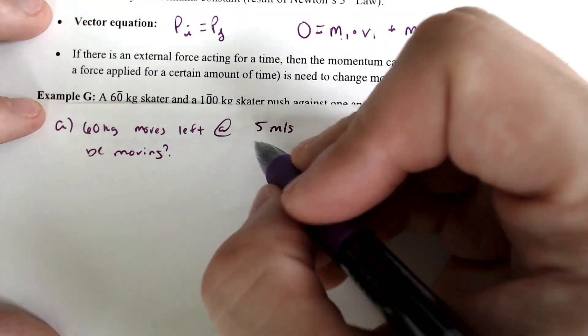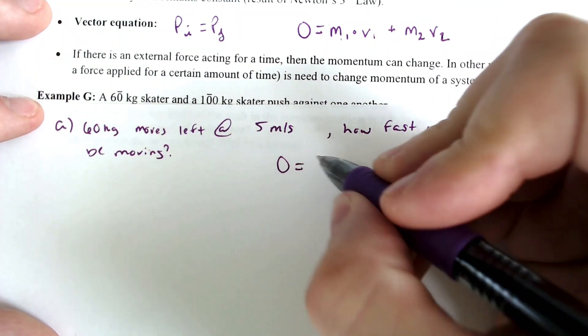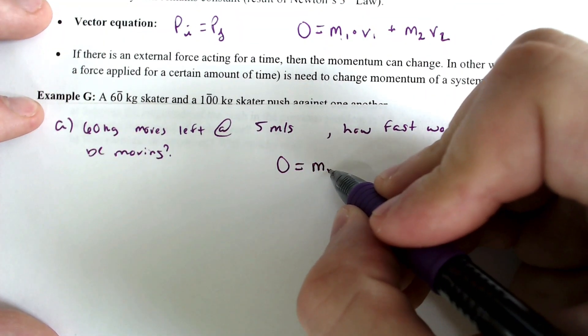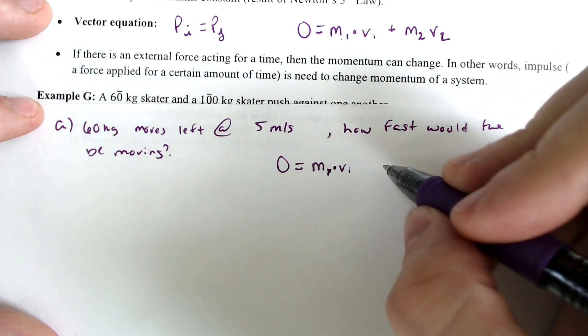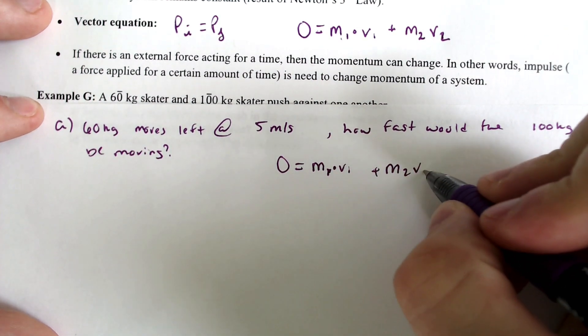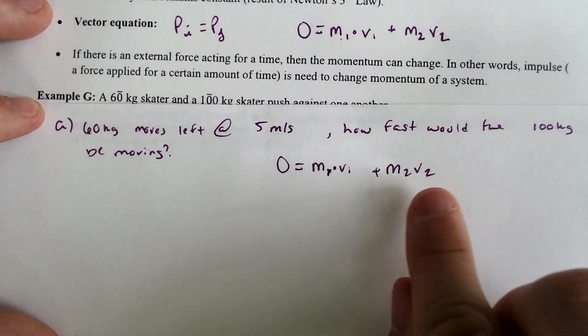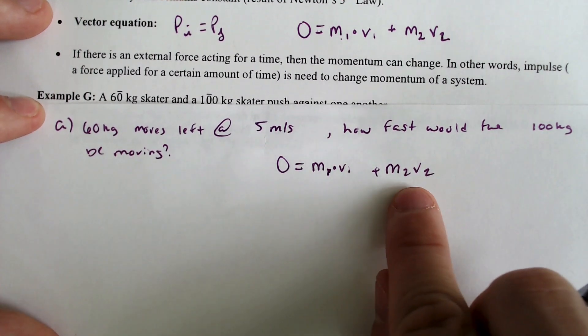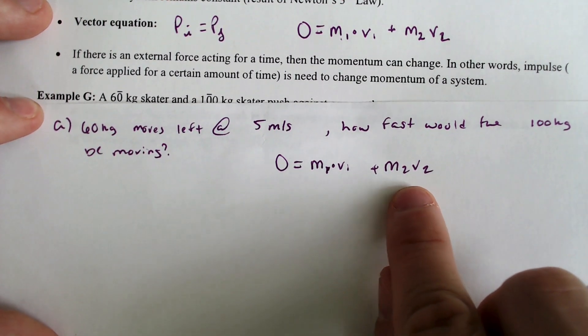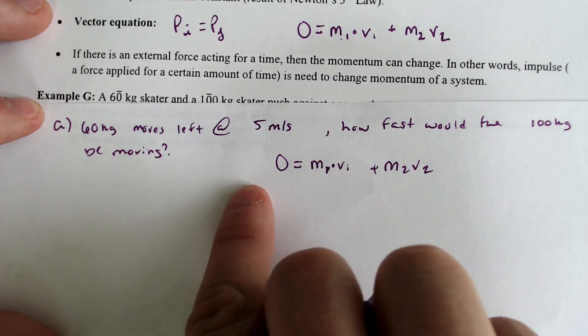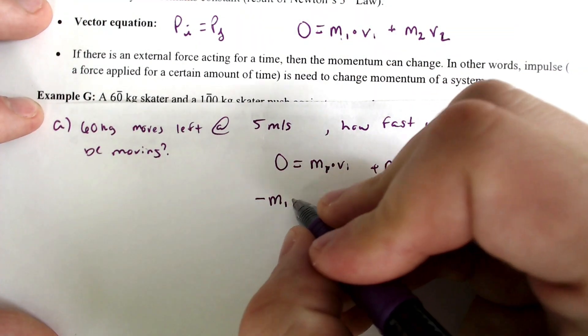So we got zero would equal the mass V1, mass one times V1 plus mass two V2. Moving everything around, I'm going to call the M2 the 100-kilogram skater.